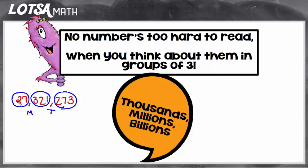So now all you have to do is think about the group of three and then say the comma word. So this is 27,321,273 — and that's how you say the number. When we talk about word form, you just write those words that make that number. I would start with 27, so I would write the words to make 27. And now where I see the comma, I'm going to write the comma word. So this one was million. Twenty-seven million.